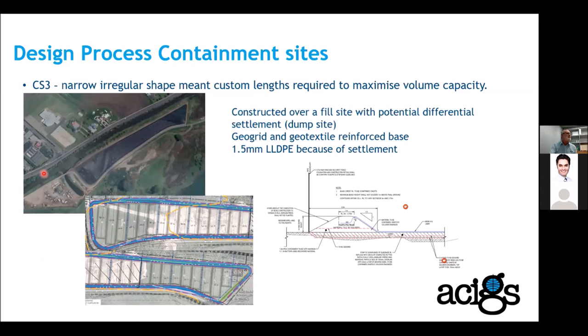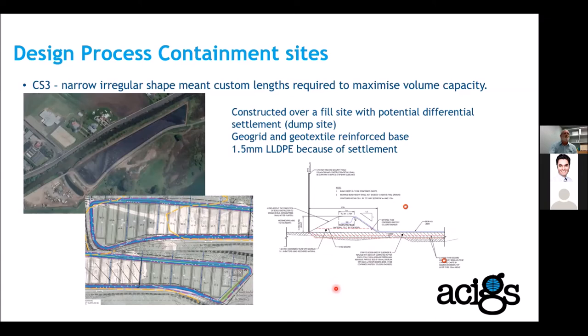The canal ran alongside CS3, so the stock bank had to be designed to ensure it was globally stable. This section of the containment cell had also been used as a dump site for wood wastes, creating potential differential settlement. The design for sub-base improvements included geotextiles, one or two layers of geogrid within the embankment, and LLDPE — linear low-density polyethylene — was selected as the geomembrane as it was better able to cope with potential differential settlement.